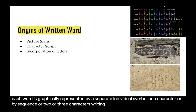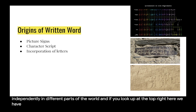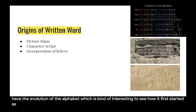Writing systems of this sort have appeared independently in different parts of the world. And if you look at the top right, here we have the evolution of the alphabet, which is interesting to see how it first started as picture signs, moving to character scripts, and finally the incorporation of letters.